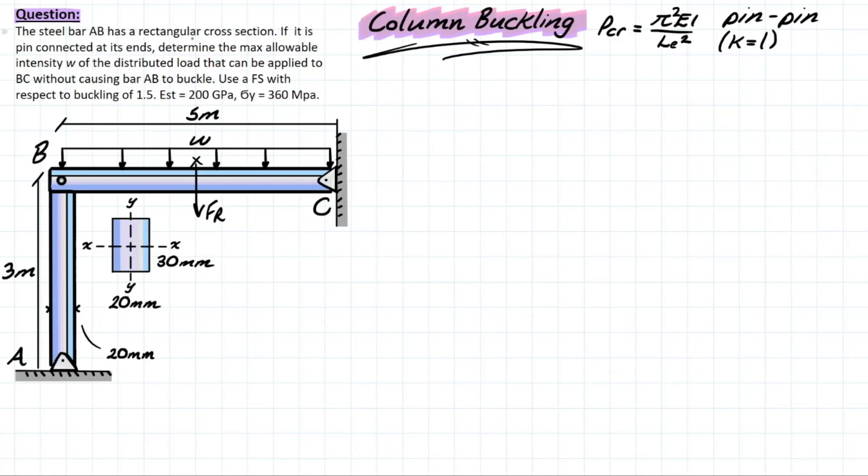All righty, let's hop into this problem and see what we're dealing with. We have a steel bar AB which is connected to member BC here, and it has a rectangular cross section. It is a pin-connected member at its ends, so at A and B. Wants us to determine the max allowable intensity of this distributed load w on B and BC such that the applied load will not allow buckling in member AB.